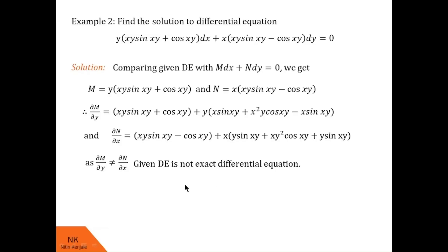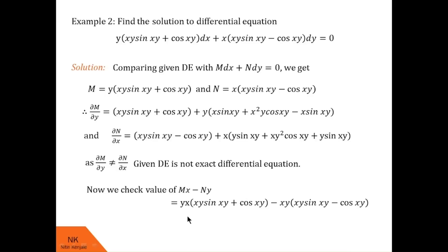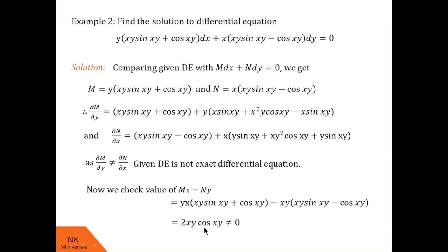Substituting M and N, we get Mx − Ny = xy(xy sin xy + cos xy) − xy(xy sin xy − cos xy). Opening the brackets and simplifying, Mx − Ny = 2xy cos xy, which is not equal to 0. So according to Rule 3, the corresponding integrating factor is 1/(2xy cos xy).